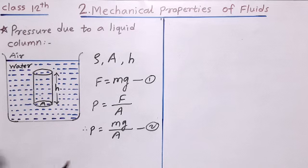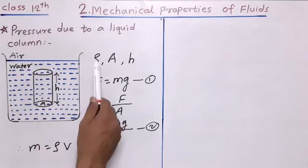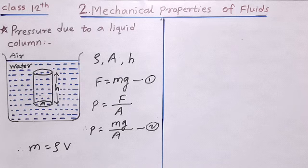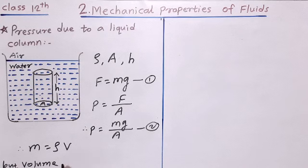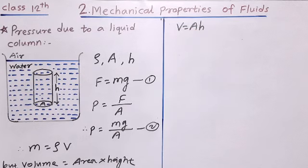There is a relationship between mass, density, and volume. Using that relation we can write m = ρ × V, where m is the mass of the liquid inside the cylinder, ρ is the density of the liquid, and V is the volume of the cylindrical column. We also know that volume equals area times height, so V = A × h.